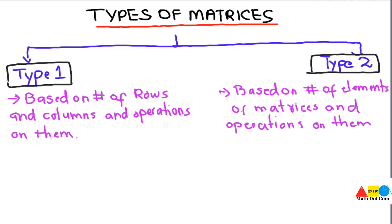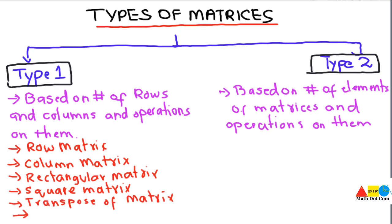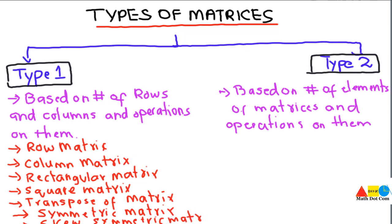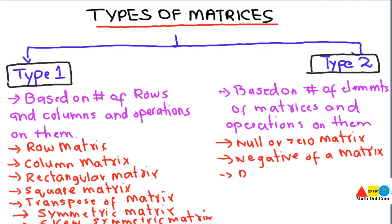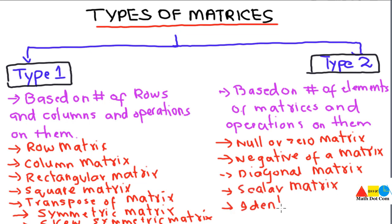Type 1 matrices include: row matrix, column matrix, rectangular matrix, square matrix, transpose of a matrix, symmetric matrix, and skew symmetric matrix. These are categorized on the basis of number of rows and columns and operations on them. Type 2 matrices include: null or zero matrix, negative of a matrix, diagonal matrix, scalar matrix, and identity matrix. These are the basic types that fall under Type 1 and Type 2 based on their different conditions.